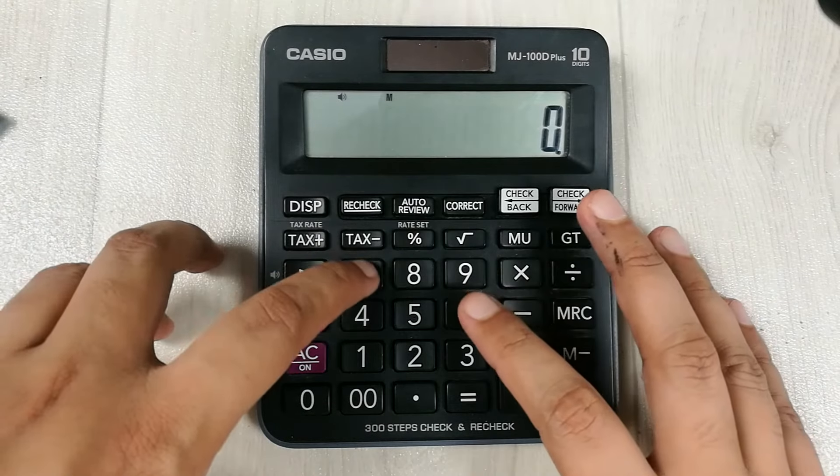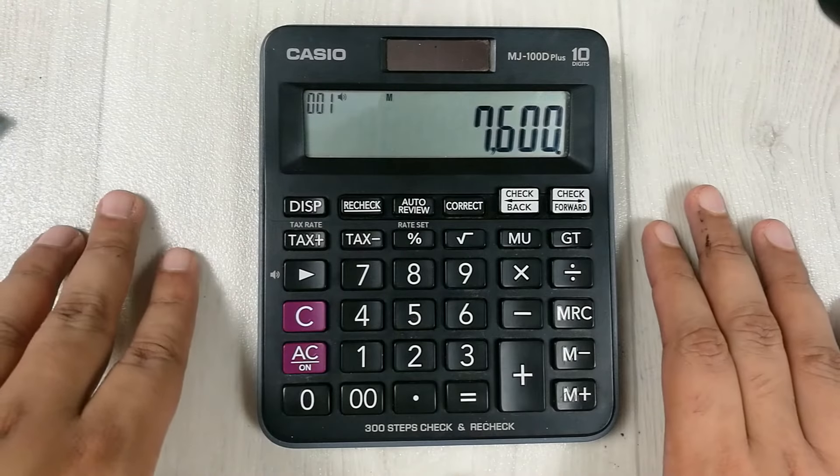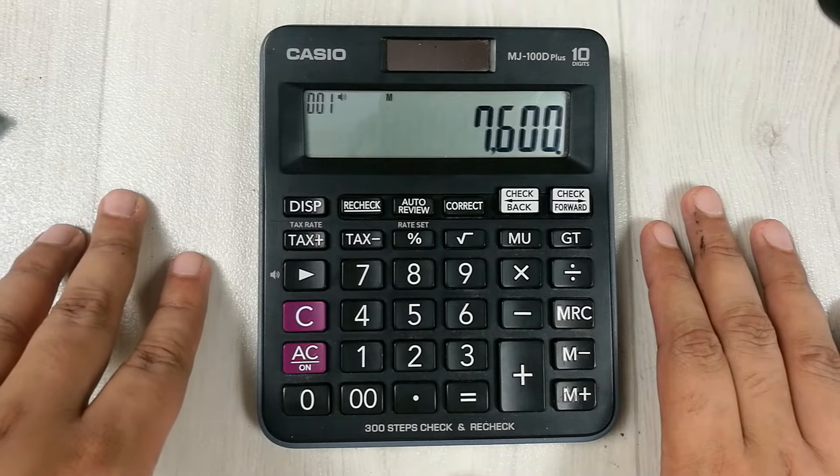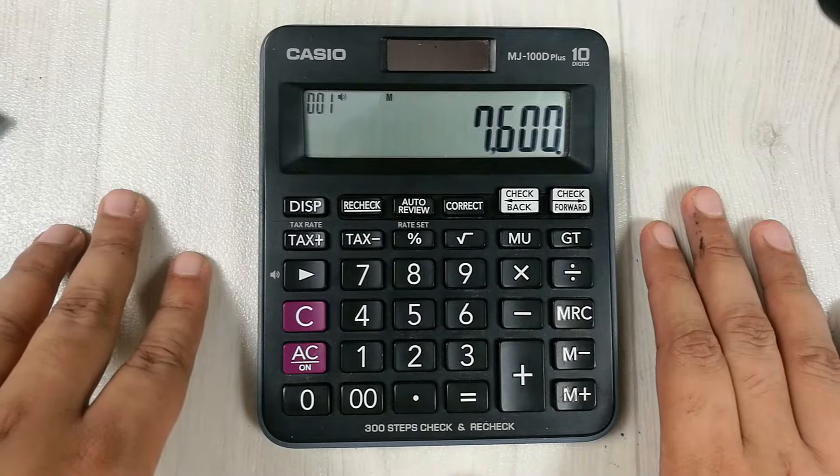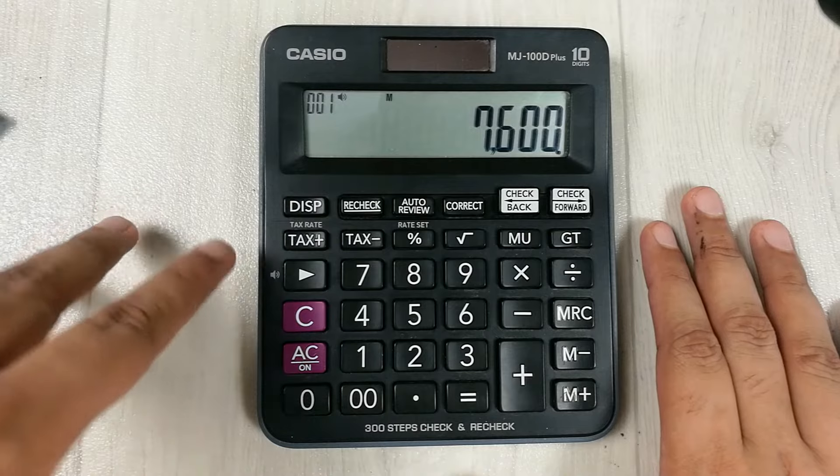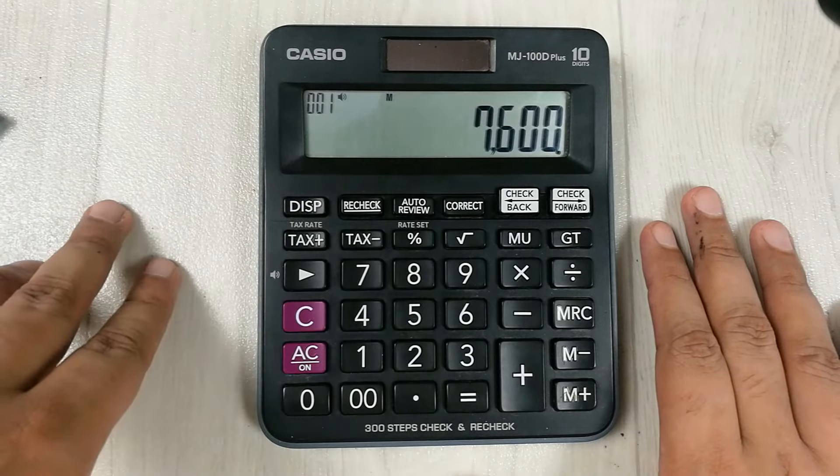And we want to find out the 10% off on that price. So in the first step, we multiply this 7600 with 10.